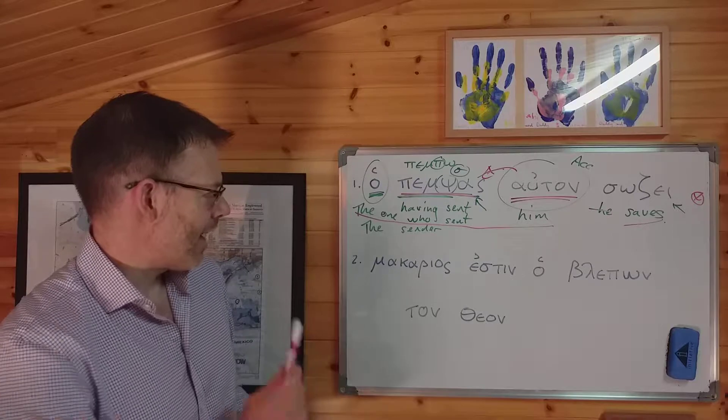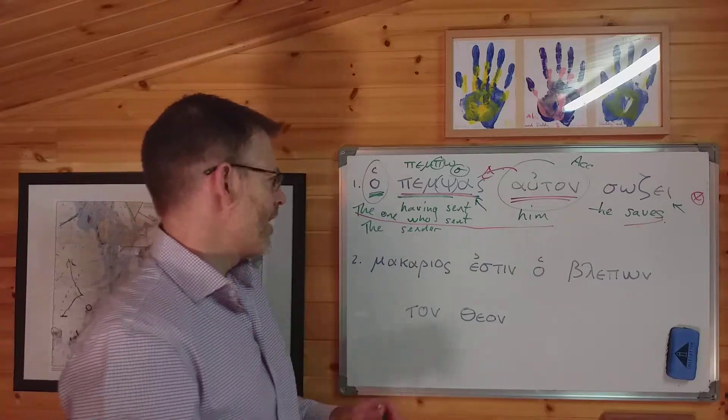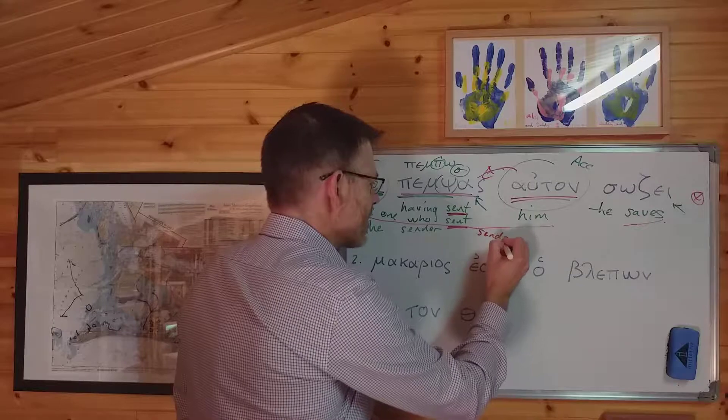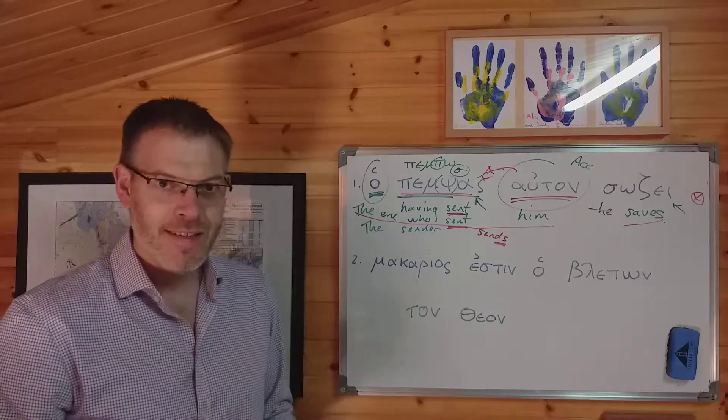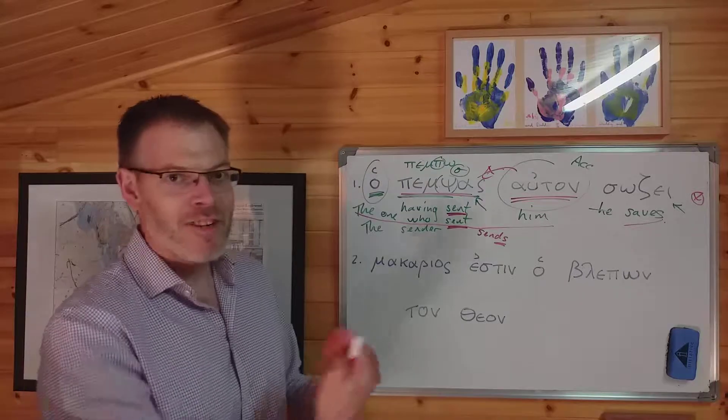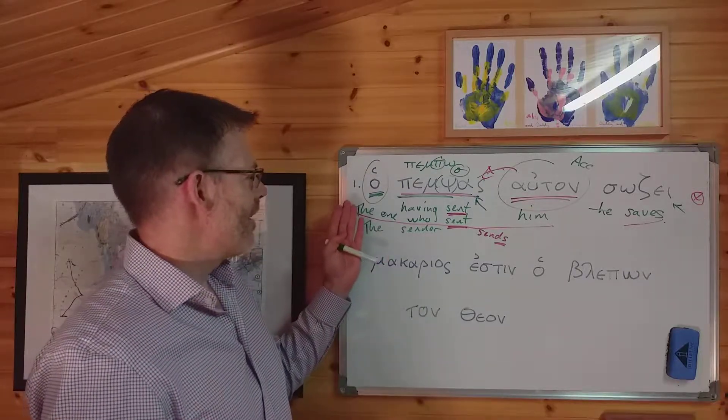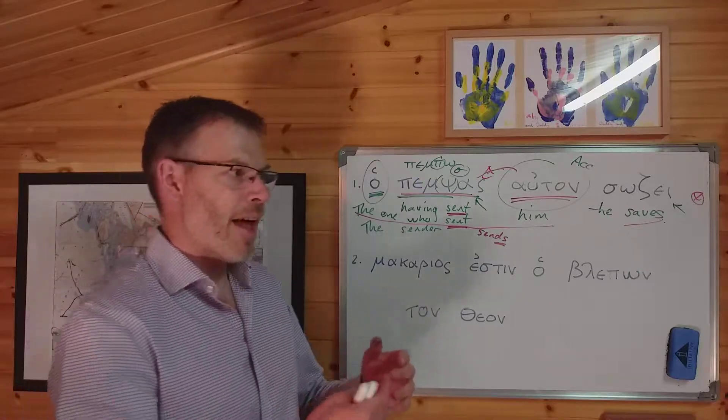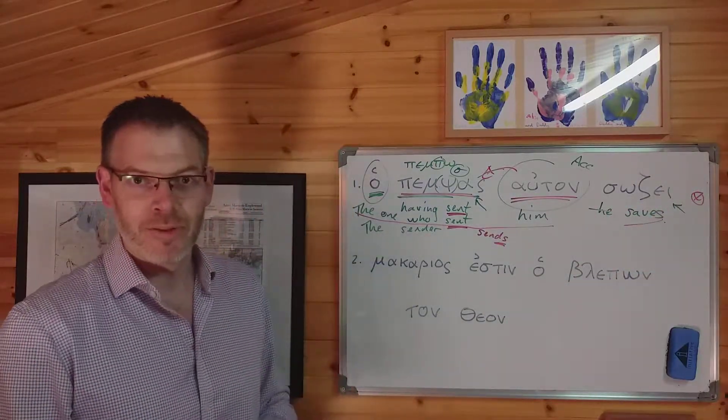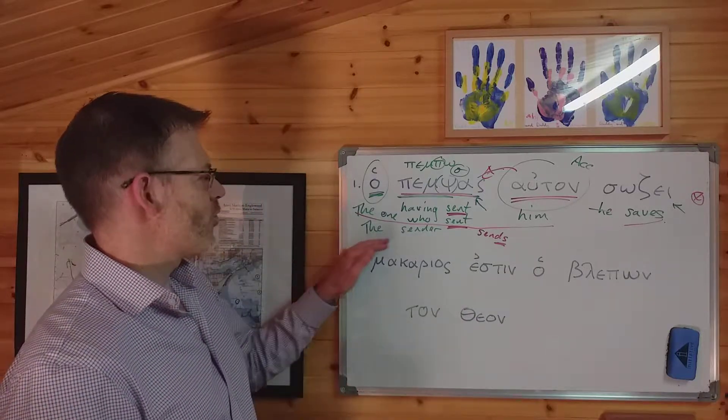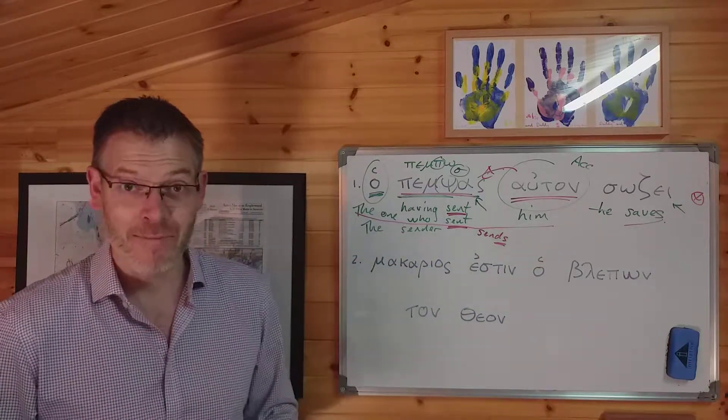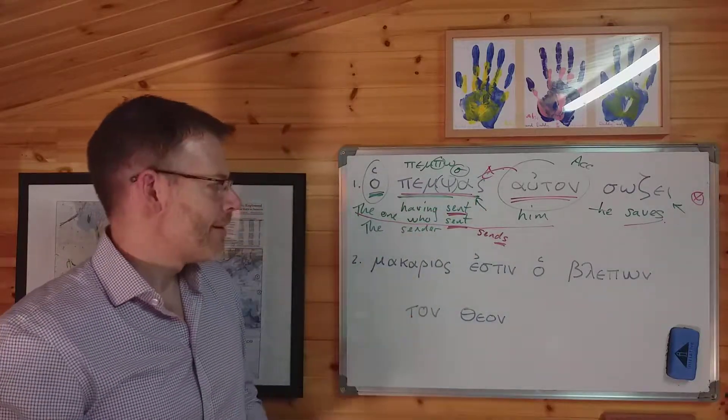Now, just one point about this. How have I translated this participle? I've translated it sent, sent, not sends. And the reason is, because it's an aorist participle. And what I'm thinking here is that the aorist participle coupled to the article is more likely to convey a sense of something happening before the main verb than the present participle. So given that, it's more likely that it's the one who sent him saves rather than the one who sends him saves. If you wanted to say the one who sends him saves, you'd say ho pempon here, not ho pempsas.